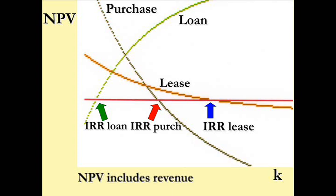I've thrown in a loan for good measure. Traditionally, leases have less interest rate risk — hence the shallower curve. Remember, they offset the cash flows associated with revenues. The purchase on the other hand has nothing but positive cash flows, which go in the same direction as revenues.